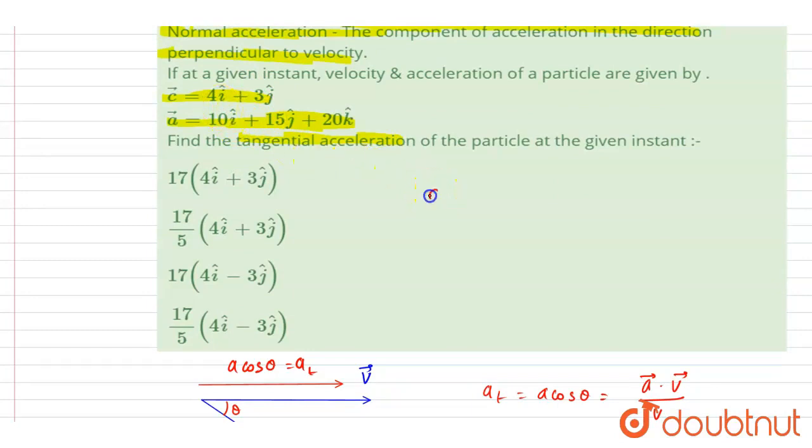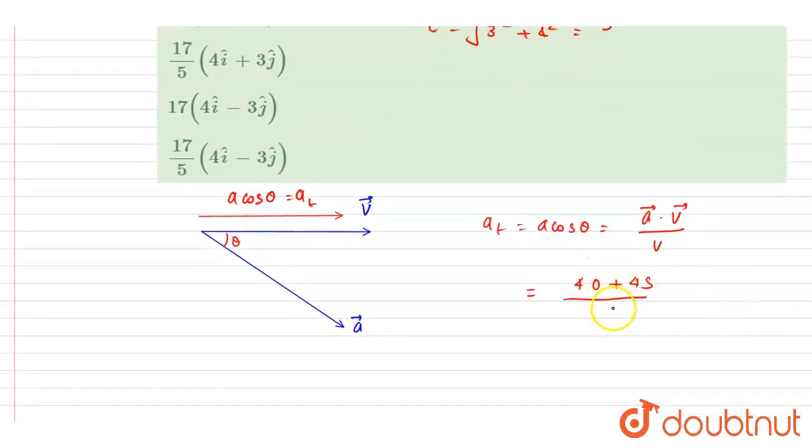If you write down the magnitude of the velocity, it will be under root of x component squared plus y component squared, that is 5. So I'll write down here 5. So it is 85 by 5, which is 17.